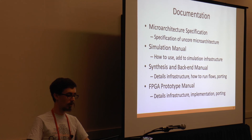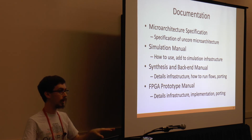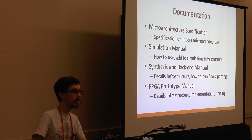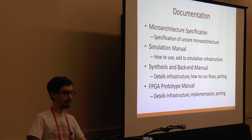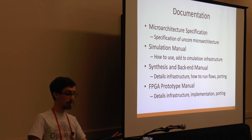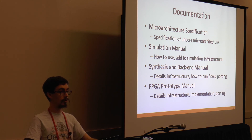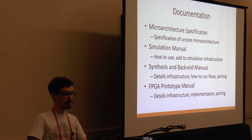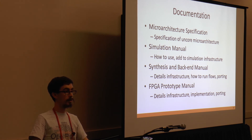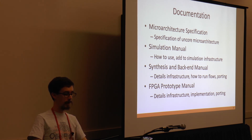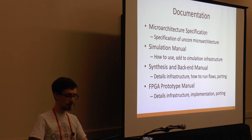In terms of documentation at openpton.org, there are four main documents. There's the microarchitecture specification, mainly about the un-core — caches, cache coherence protocol, and networks. There's a simulation manual explaining how to use our simulation infrastructure and how to add to it. There's a synthesis and backend manual for porting OpenPton plus Arianne onto a new process technology. And we have an FPGA prototype manual covering what's running on the FPGA, which Alexei will explain later in the tutorial.